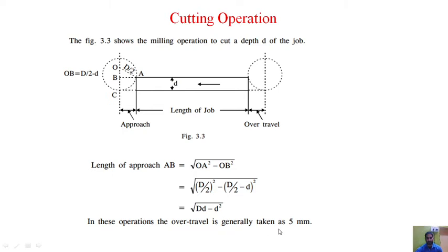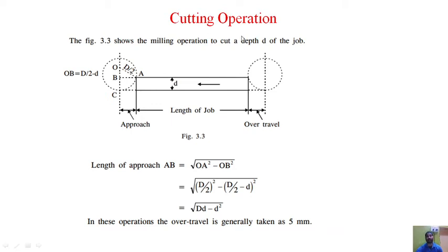The approach length is √(Dd − d²). If the cutter diameter is not mentioned, approach is generally taken as 5 mm. Over travel is also generally taken as approximately 5 mm for the cutting operation.